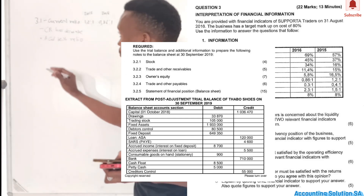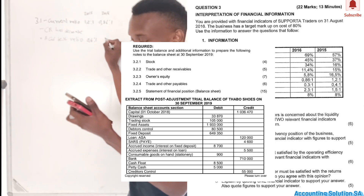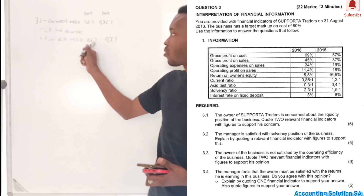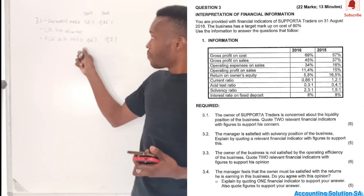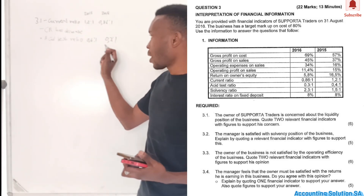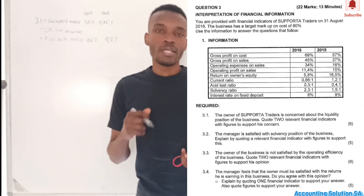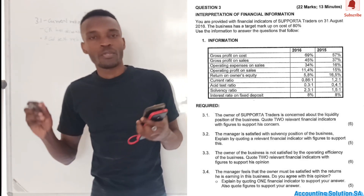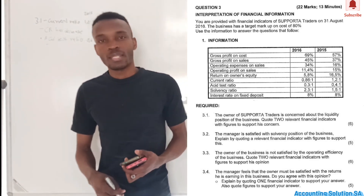Our acid test ratio last year was 0.4 : 1 and in 2016 it went down to 0.3 : 1. Even last year we would not have been able to pay short-term debt because our assets without inventory were very low. In the current year the situation became worse — assets went down by 0.1. The owner won't be able to pay short-term debt without inventory, which is why the owner is very concerned that the liquidity position is bad.